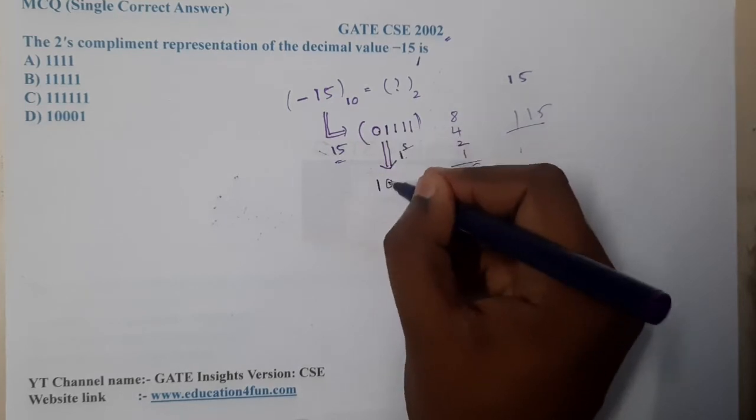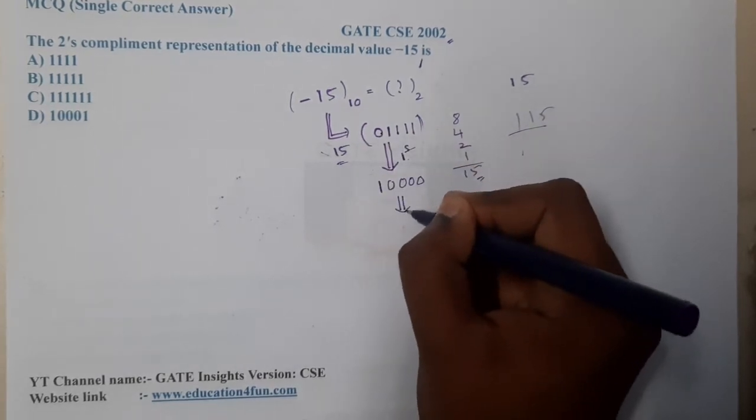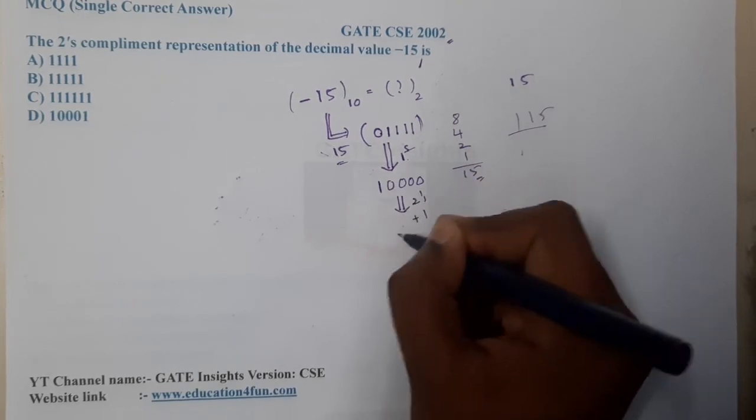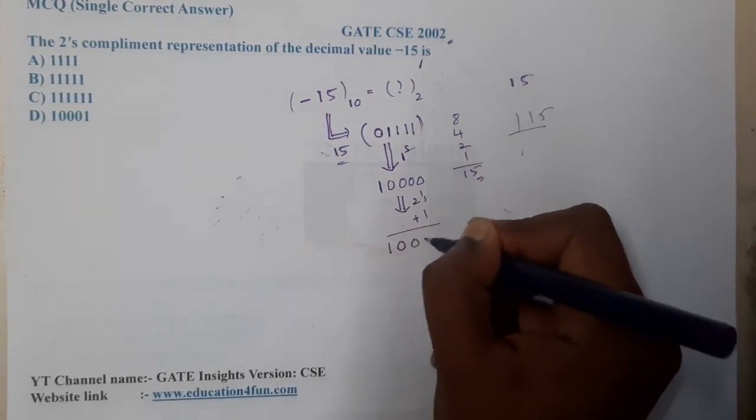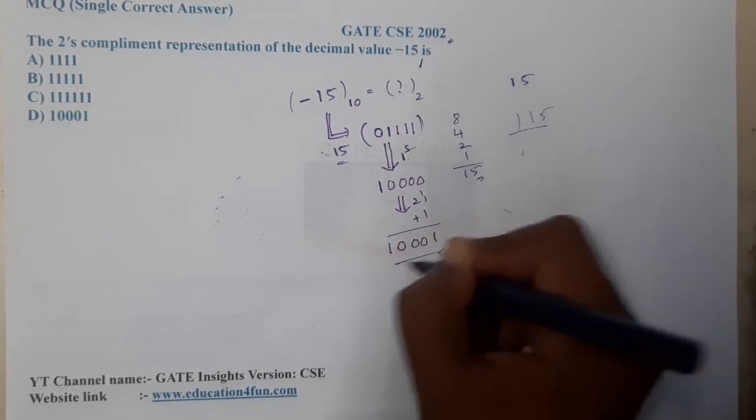To convert it into 2's complement, you will add plus 1 to it, that is 1 0 0 0 1. So now check whether in options is this number there. Yes, option D is the correct answer.